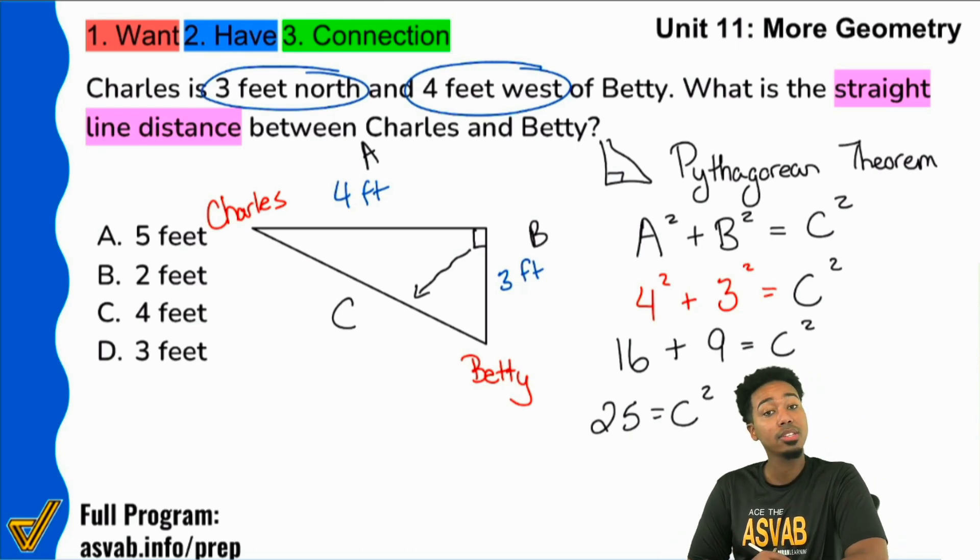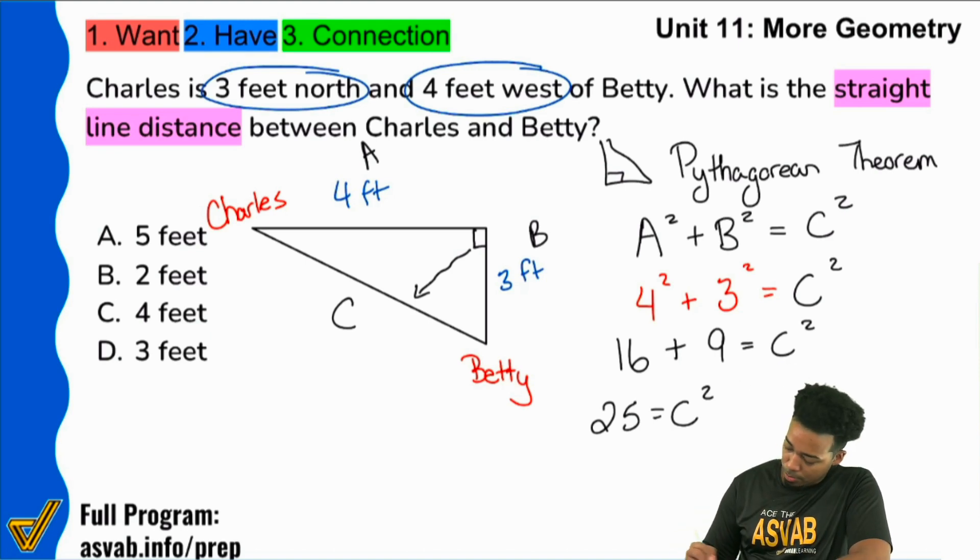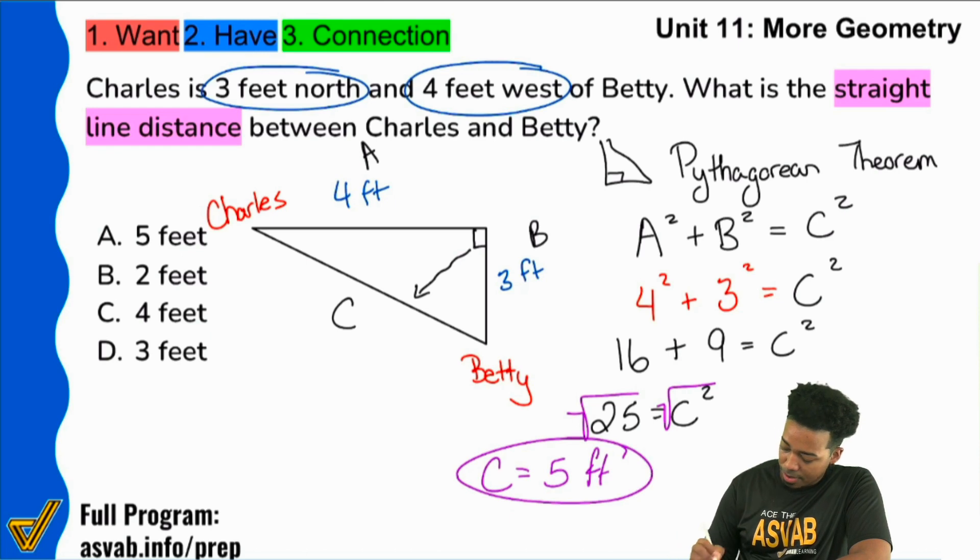So what do we do lastly here? Remember that the last thing we'll do is do the opposite operation. So to get rid of a square, you do the square root. So we'll take the square root of both sides. And it's going to give you C equals five. So that'd be five feet away.